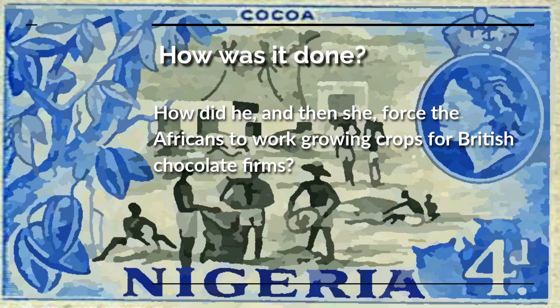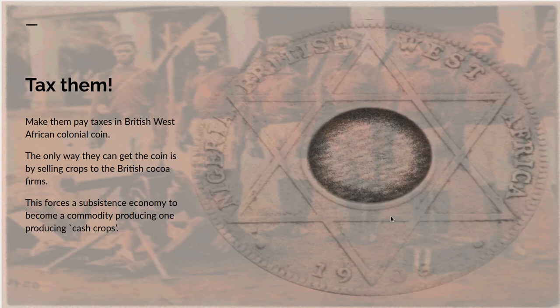Not actually traditional Yoruba dress, but the fantasy that the British imperialists had. How was Edward, and later Elizabeth, able to force the Africans to work growing crops for British chocolate firms? They did it by taxing — making the West Africans pay taxes in British West Africa colonial coin. And the only way they could get the coin, or the main way, was by selling the crops to British cocoa companies.